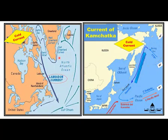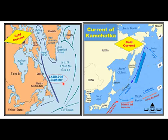Now we are going to study about examples of cold currents. The Labrador Current is an example of a cold current, located near Canada and areas near the USA. Another example is the Current of Kamchatka, which is also another example of a cold current, as you can see on the map.